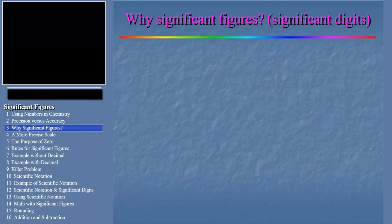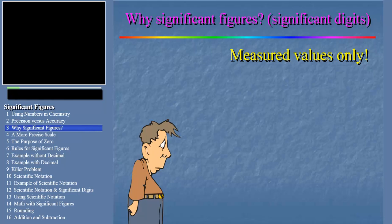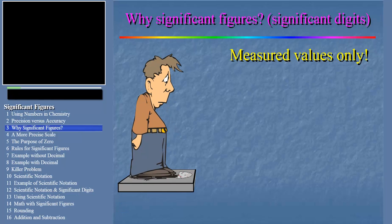Okay then, why significant figures? The number of significant figures, also called significant digits, communicates to the reader how precise the measurement is. Keep in mind, it tells us nothing of the accuracy of the measurement. Now let me remind you, what I'm about to say applies only to measured values, like how much you weigh, not exact numbers.